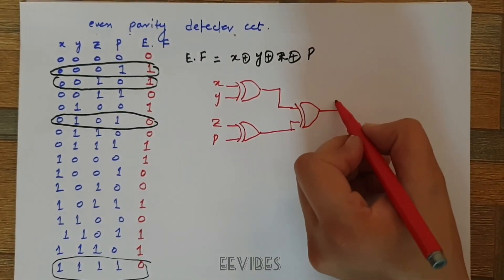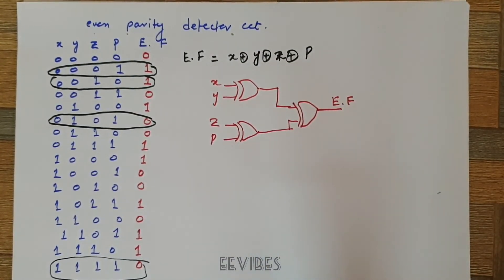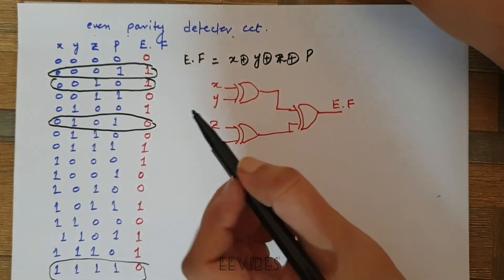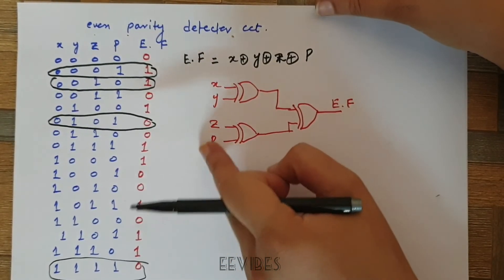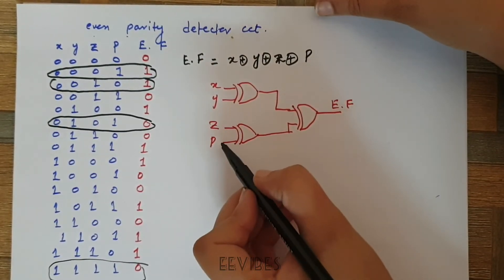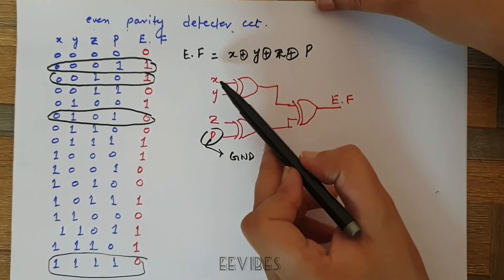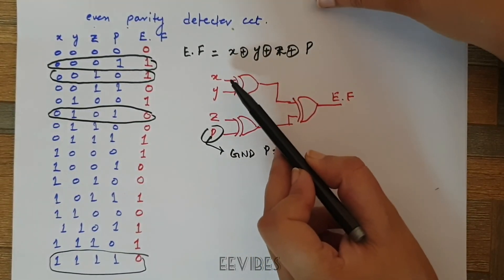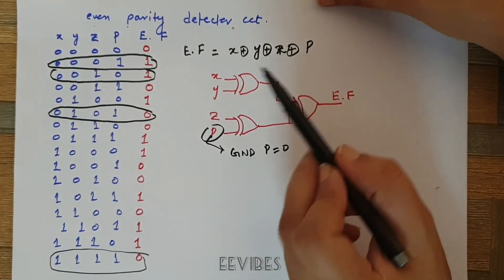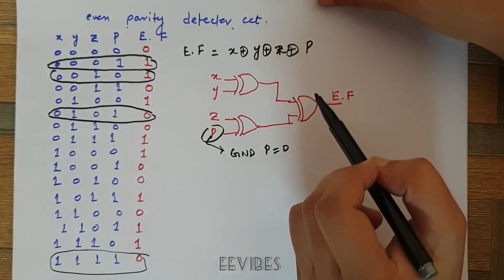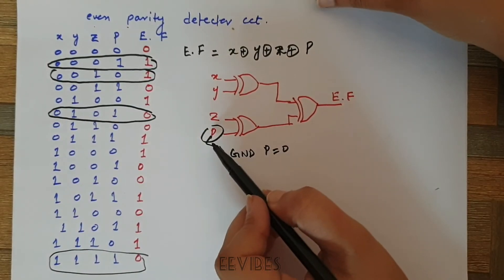You ultimately get the error function E. One thing to notice is that the even parity generator circuit has a similar structure. One advantage is that you can ground the pin P, and the remaining circuit then takes the XOR of X, Y, and Z to generate the parity bit. So the same circuit can be used for both parity generation and parity detection — simply by grounding the parity bit.